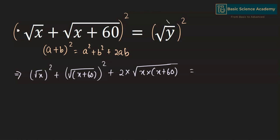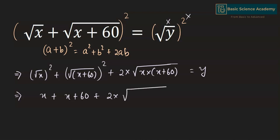The square root and square cancel out. This gives x plus (x + 60) plus 2·√(x(x+60)) equals y², which simplifies to 2x + 60 + 2·√(x² + 60x) equals y².